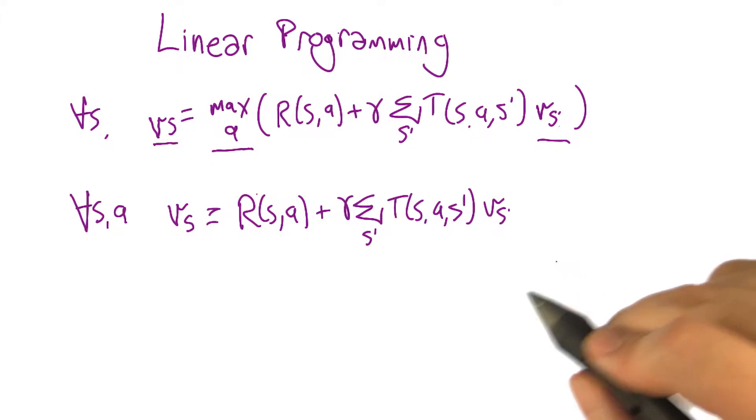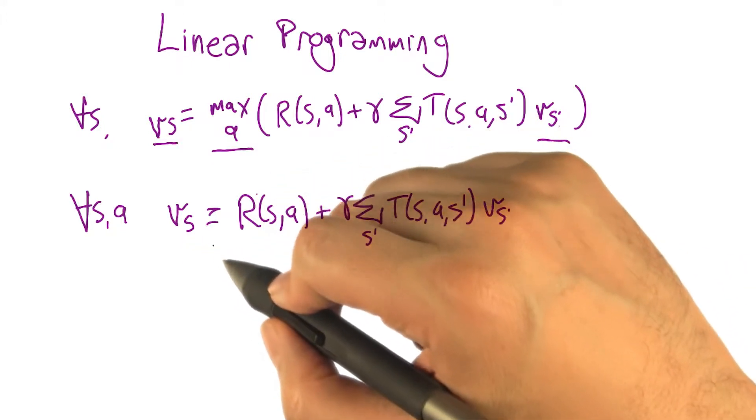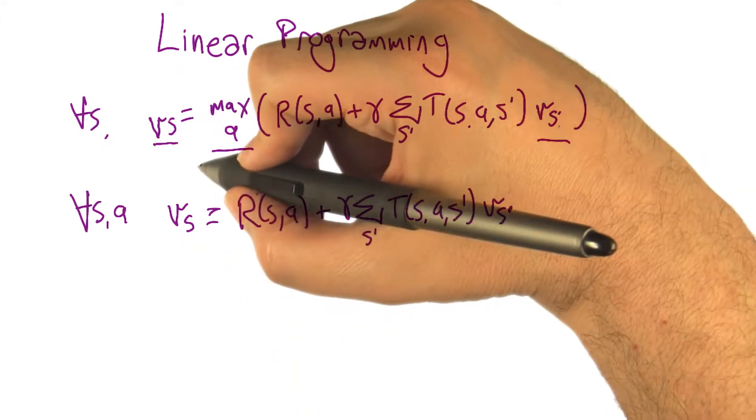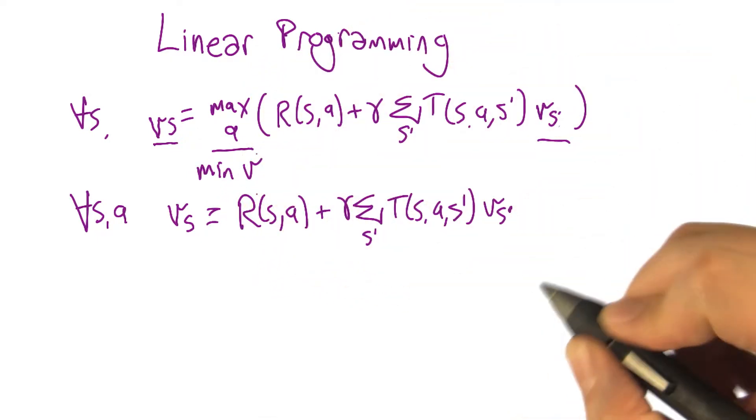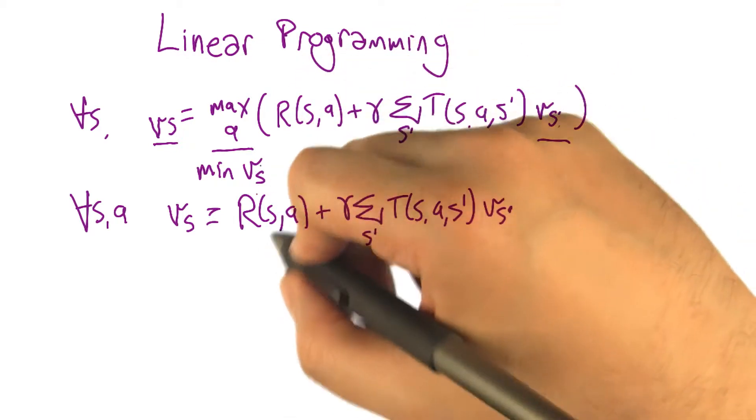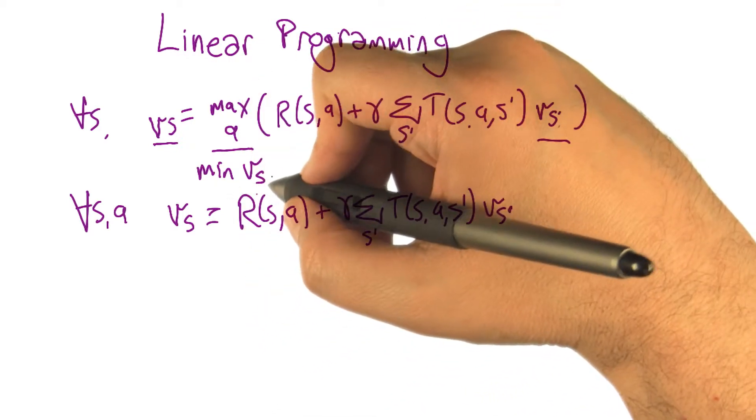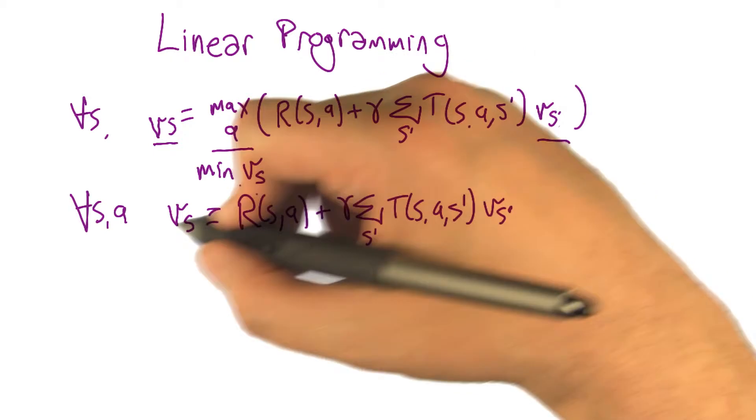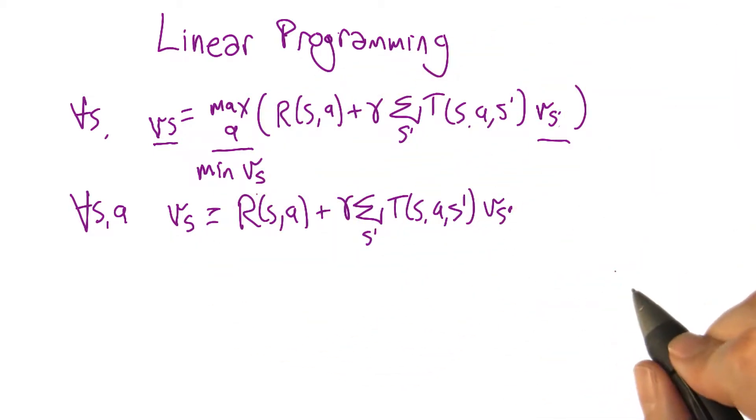So that's good. Now, we have to add that min thing. So what do we minimize here? V. So we can't just minimize V like that because that's a vector. And we can't just minimize V sub S because S is unbound here, right? It's like which S, which S do we want to minimize?